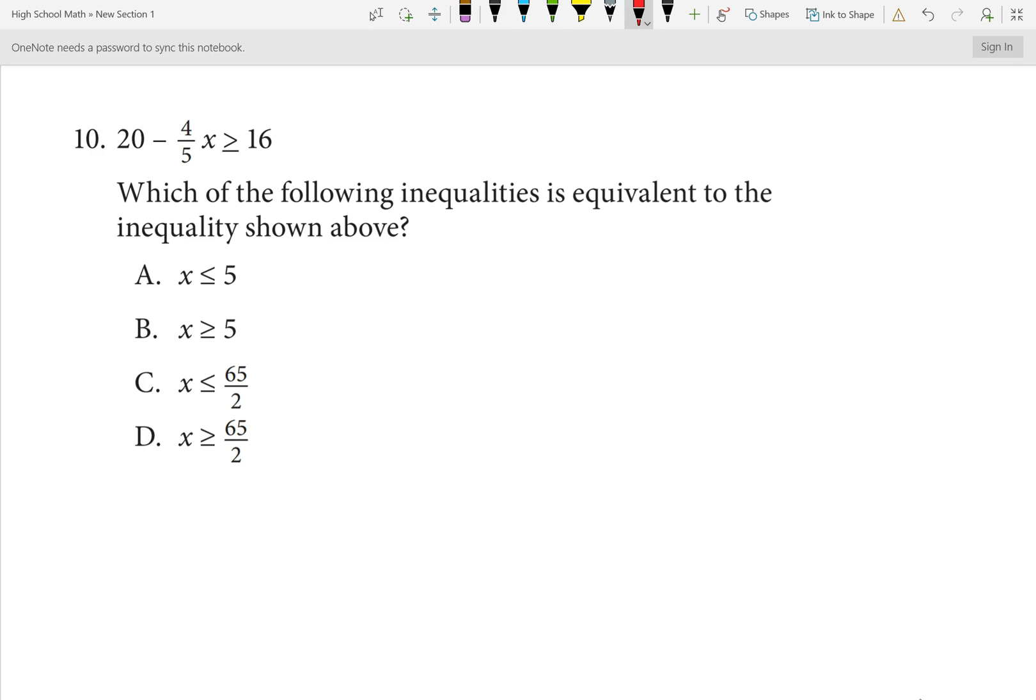Which of the following inequalities is equivalent to the inequality shown below? We're just asking to solve for X. So we have 20 minus 4 fifths X is greater than or equal to 16. One thing you can do when you have a fraction, you can simply go through and multiply by that denominator and it'll get rid of your fraction. And we saw this this year with our rational expressions. I'm just going to multiply everything by 5. 20 times 5 will be 100. 5 times 4 fifths simply cancels that denominator, leaving minus 4X. 5 times 16 is 80. This might be easier for you to solve.